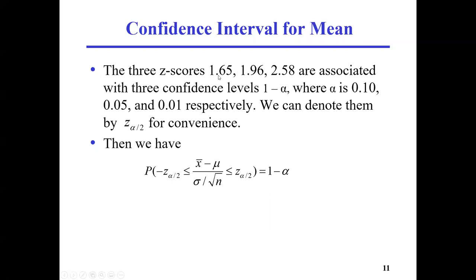The three z-scores 1.65, 1.96, and 2.58 are associated with three confidence levels (1 minus alpha), where alpha is 0.1, 0.05, and 0.01 respectively. We can denote them as z-half-alpha for convenience. Now we use negative and positive z-half-alpha to replace these specific values, and the probability is equal to 1 minus alpha. This abstract formula works for any alpha you assign — as long as you assign a specific alpha, you know the value of 1 minus alpha and you also know the value for z-half-alpha.